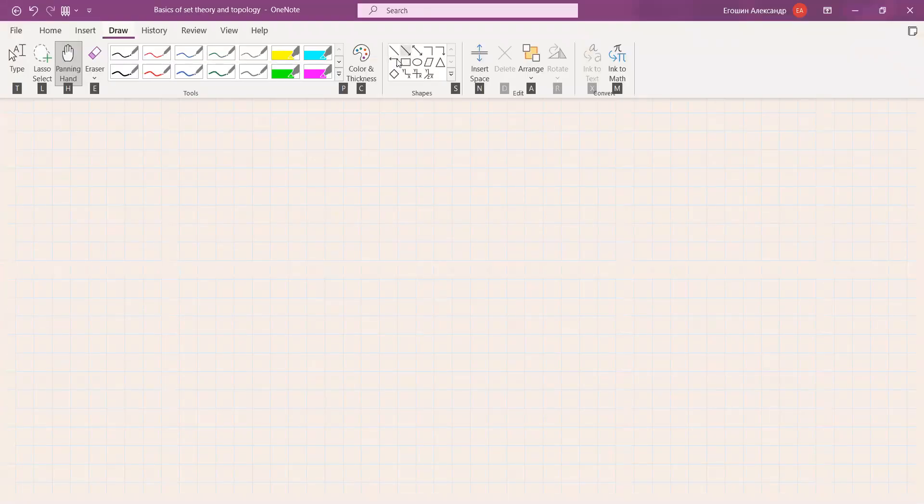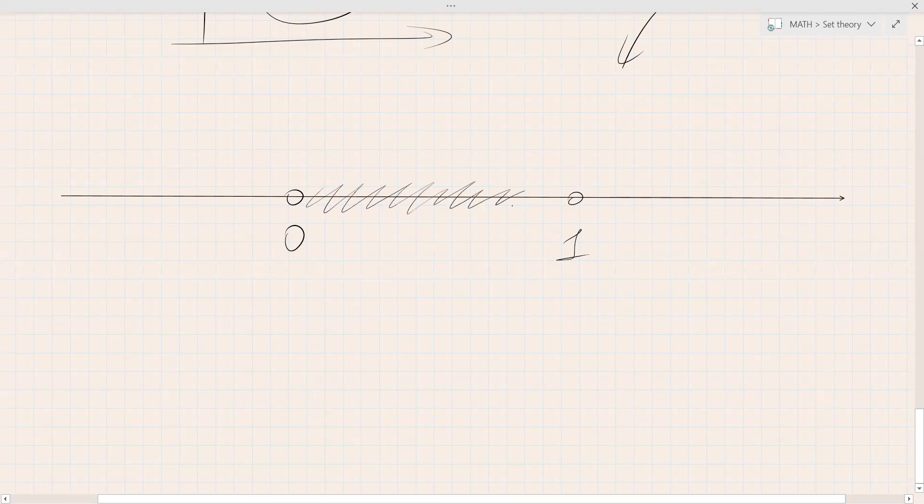So what do we need this for? We need this epsilon neighborhood in order to define an open set. Once again, let's draw a line. Let's take an interval starting from zero to one, so all these points belong to that interval, to that set A, and we say that A is an open set.